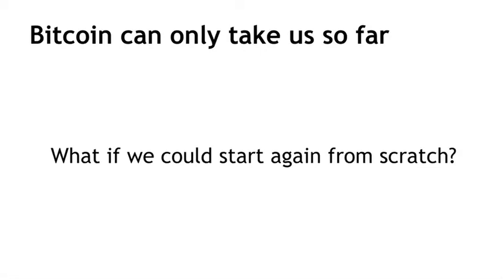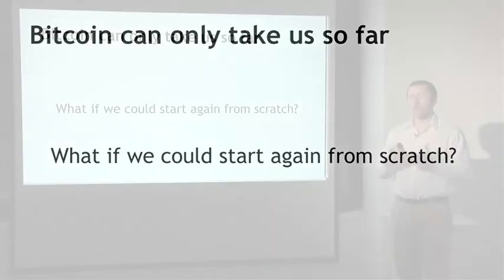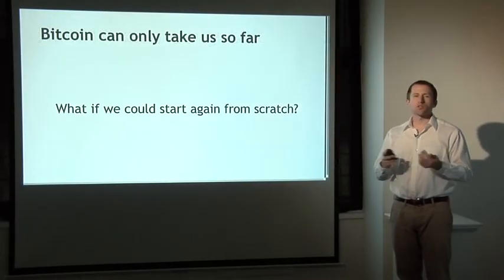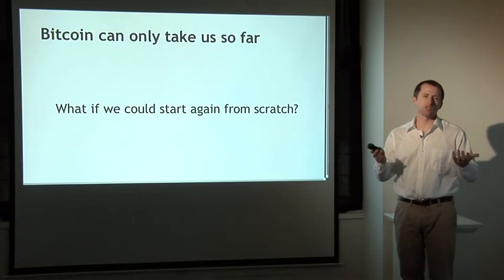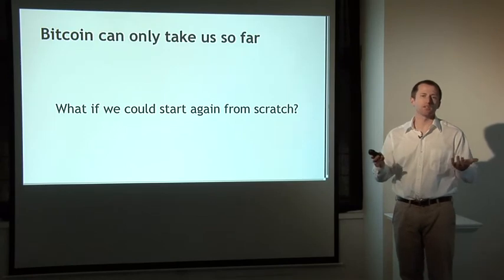So what if we could start again from scratch — forget about soft forks and hard forks and bolting things onto Bitcoin, and say we've learned a lot since 2008 when Bitcoin first came out, so why don't we design a new cryptocurrency where everything will be better? The next lecture will be all about altcoins, which are attempts to do just that, and we'll talk about all the promising ideas people have and all the challenges of starting a new currency at this point.